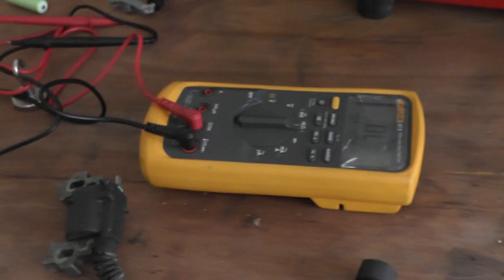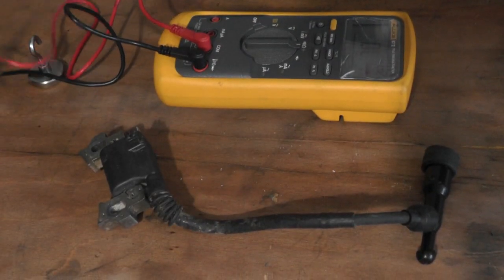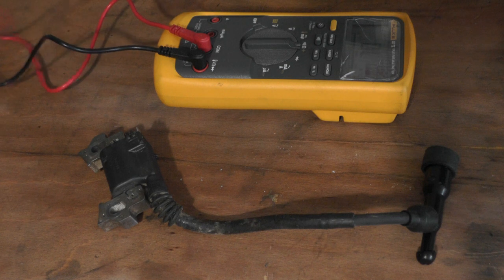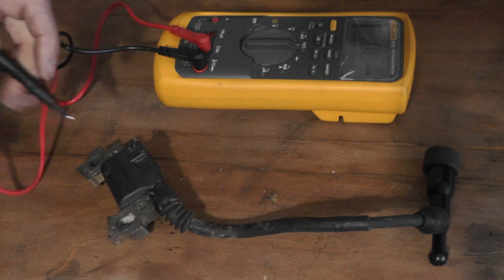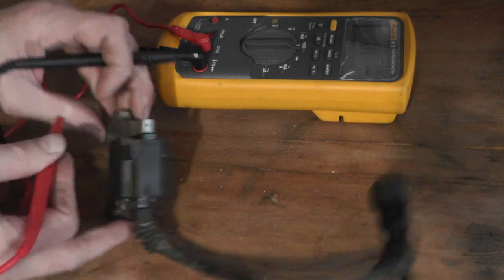That's my resistances on this coil on the last test while it was on the machine. I'm going to test it off to see if there's any difference. I'm going to test between the metal part here and the little tab.